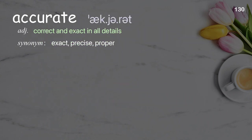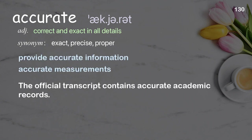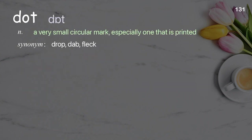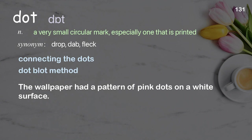Accurate: correct and exact in all details. Examples: provide accurate information, accurate measurements. The official transcript contains accurate academic records. Dots: a very small circular mark, especially one that is printed. Examples: connecting the dots, dot blot method. The wallpaper had a pattern of pink dots on a white surface.